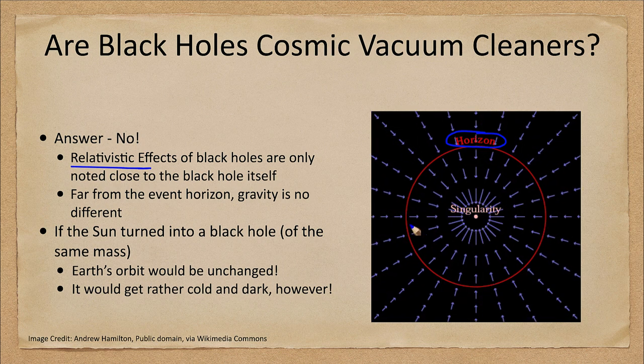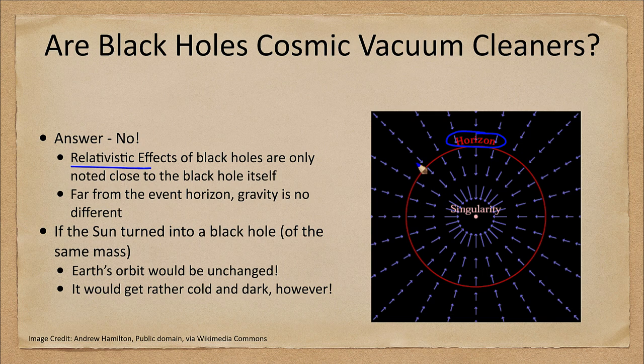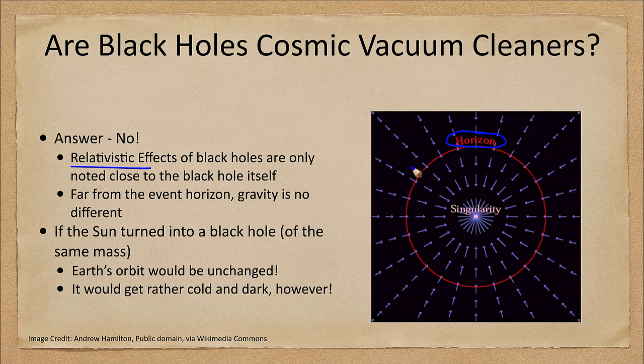Within the event horizon, no light can escape and we cannot know anything about what goes on inside. Outside of that, light can escape from outside that event horizon. Now if you get close to the event horizon, very strange things will happen, so you don't want to get too close to an event horizon.